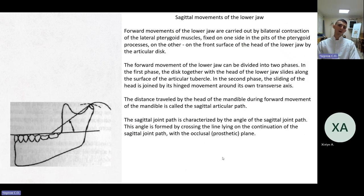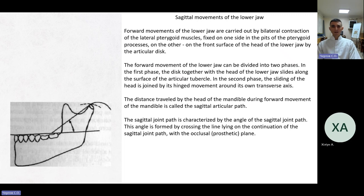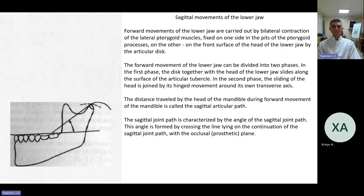Sagittal movements of the lower jaw. Forward movements are carried out by bilateral contraction of the lateral pterygoid muscles — fixed on one side in the pits of the pterygoid processes and on the other on the front surface of the head of the lower jaw by the articular disc. The forward movement can be divided into two phases: in the first, the disc together with the head slides along the articular tubercle; in the second, sliding is joined by hinge movement around the transverse axis. The distance traveled by the mandibular head during forward movement is called the sagittal articular path, characterized by the angle of the sagittal joint path formed by crossing the sagittal joint path line with the occlusal or prosthetic plane.